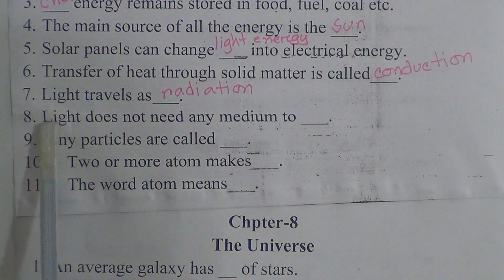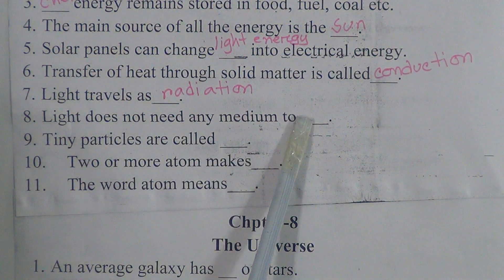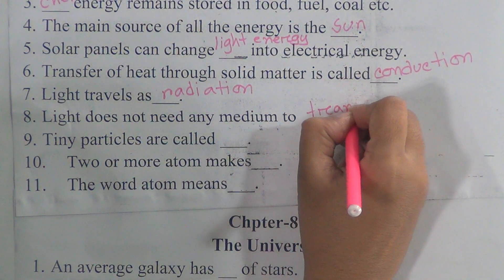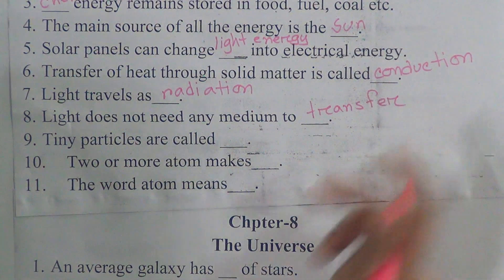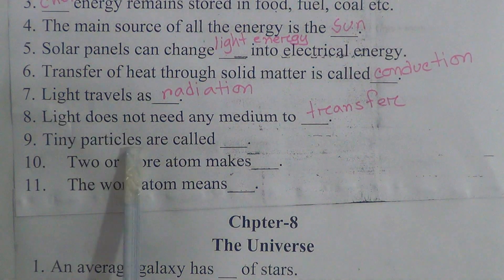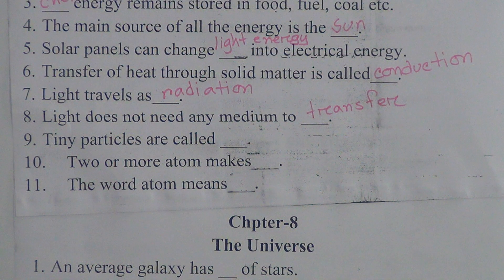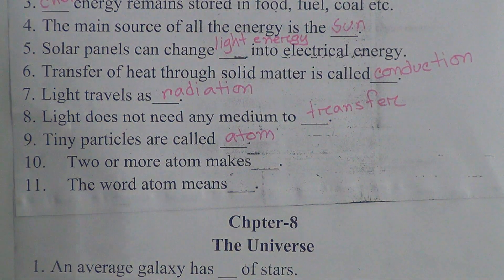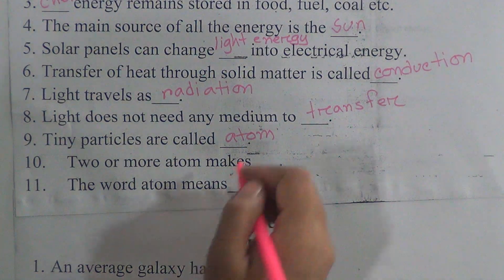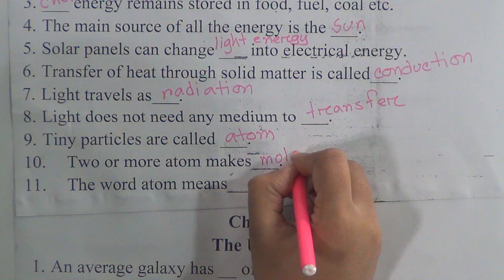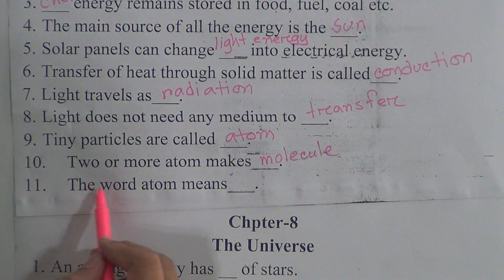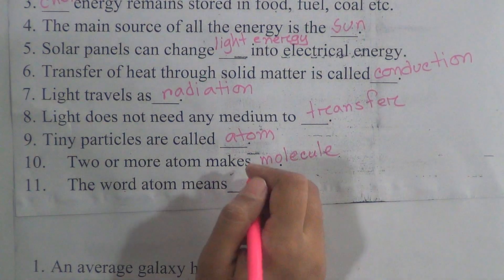Number eight: light does not need any medium to travel or transfer. Number nine: tiny particles are called atoms. Number ten: two or more atoms make a molecule. Number eleven: the word atom means invisible.